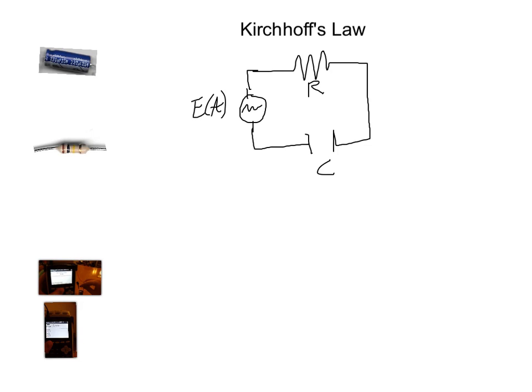Kirchhoff's Law says that the algebraic sum of voltage drops across the elements in a simple loop of an electrical circuit is equal to the applied voltage. What we're going to use today is a resistor and a capacitor and some energy source E. The voltage drop for the resistor plus the voltage drop for the capacitor is going to be equal to E. And we're actually going to do an actual experiment and verify this actually does work.